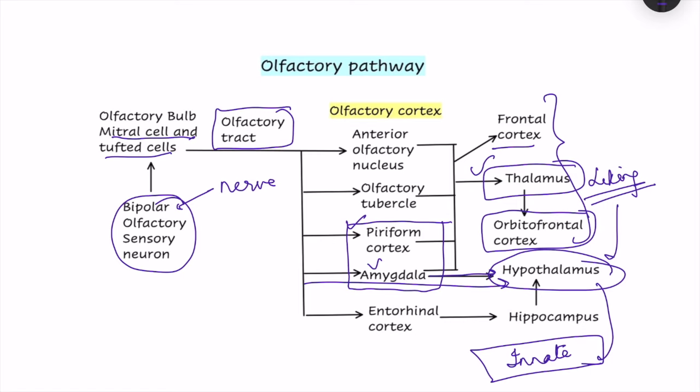Olfactory information also reaches the memory area via the entorhinal cortex to the hippocampus, which is important for memory of odors. From the hippocampus, information reaches the hypothalamus — only when memory is present can we remember that a particular odor is linked to a specific food and whether we like it or not. This concludes the olfactory pathway.